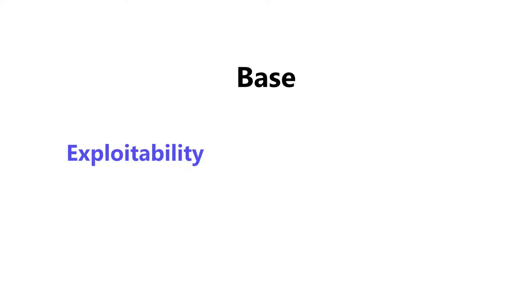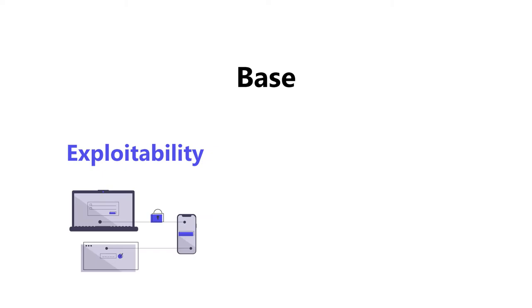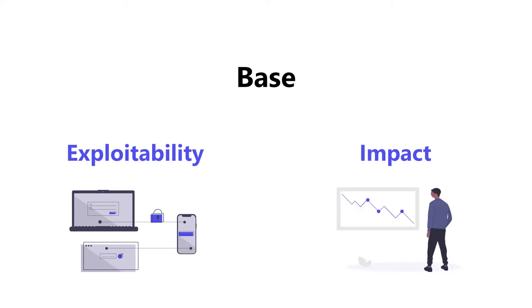The base group is divided into two sets of metrics: exploitability metrics, which describe how difficult it is for a potential attacker to take advantage of the vulnerability, and impact metrics, which describe the consequences of a successful attack or exploit.